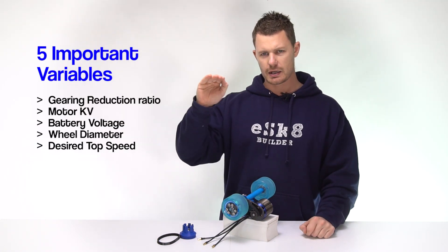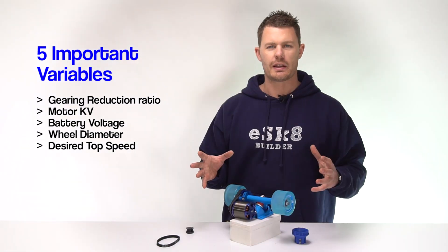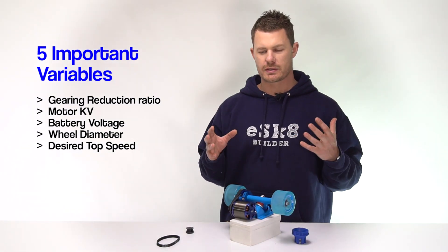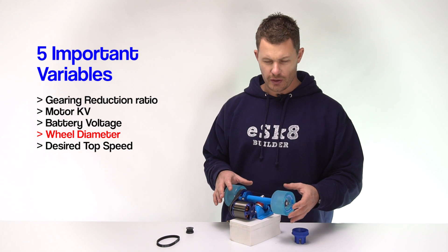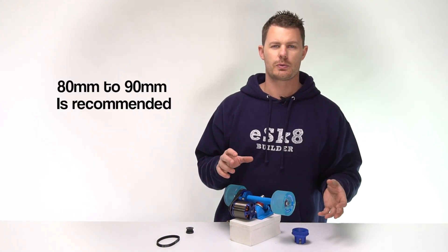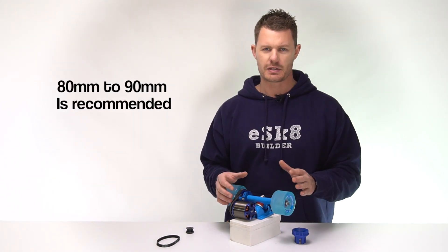I said there's five variables, you need to start limiting some of these variables. Okay let's start with the first variable and that's wheel size. So most people will go with a wheel between 80 millimeters and 90 millimeters diameter.